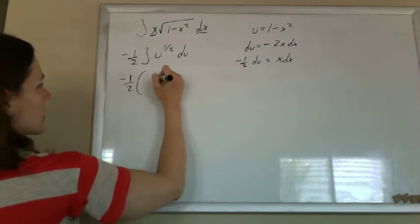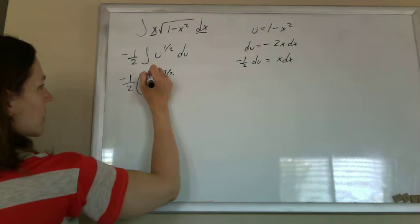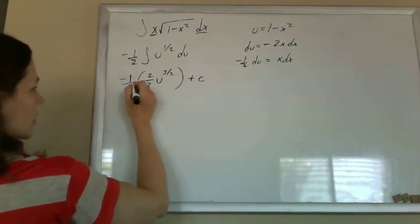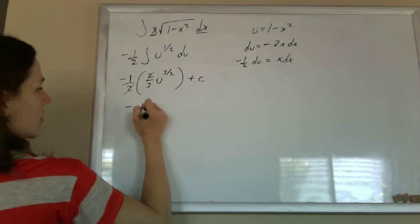Taking the anti-derivative, u to the three halves times two thirds, plus a constant. The 2 cancels, giving negative one third.